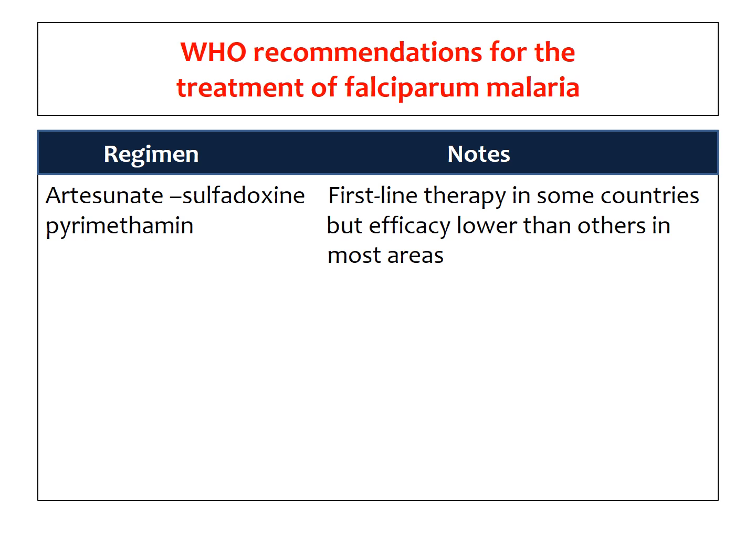The fifth combination is artesunate with sulfadoxine and pyrimethamine. These three drugs are combined to use as first-line therapy in some countries, but the efficacy of this combination is lower than others in most areas where other combinations are useful.